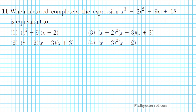It says, when factored completely, the expression x to the third minus 2x squared minus 9x plus 18 is equivalent to. So this problem is assessing your ability to factor by grouping. So x to the third minus 2x squared minus 9x plus 18. To factor by grouping, all you simply do is take a look at the number of terms you have. You have four terms, so you can group the first two and the last two.